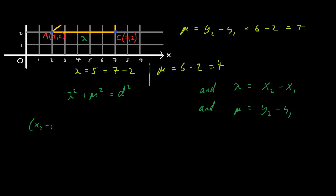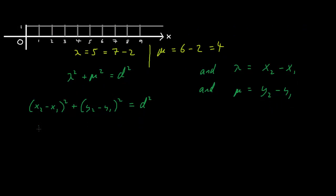x2 minus x1 squared plus y2 minus y1 squared equals d squared. And if we rearrange this formula we get d equals the square root of x2 minus x1 squared plus y2 minus y1 squared.